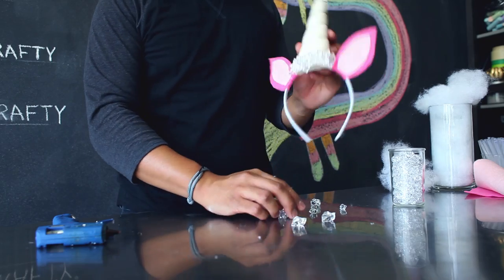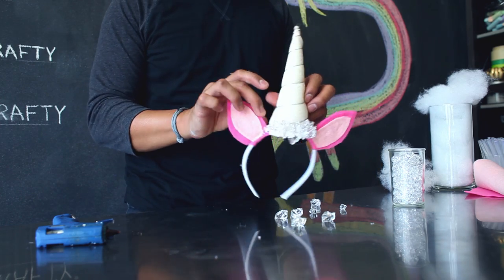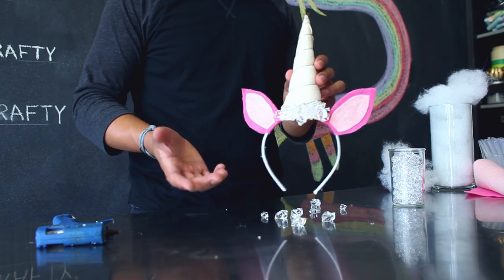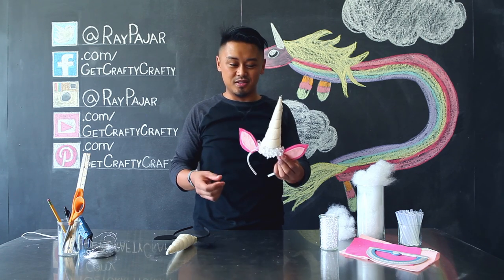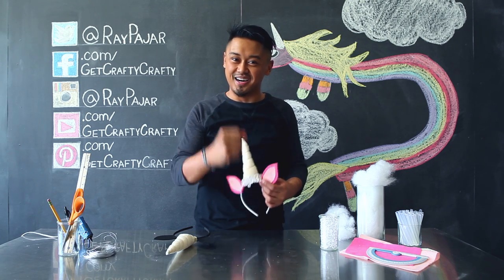As an optional step, you can glue these decorative stones onto the base of your horn just to make it a little more special. After the hot glue has dried on your horn, it's ready to be worn and that accidentally rhymed.